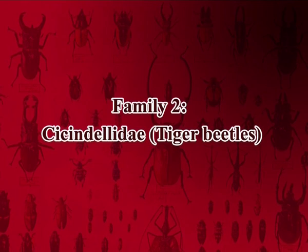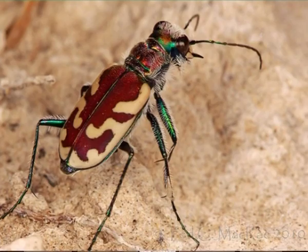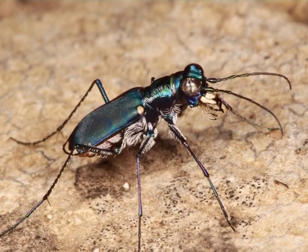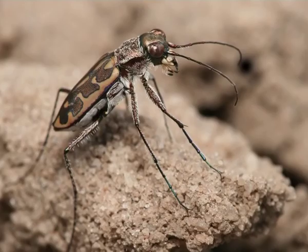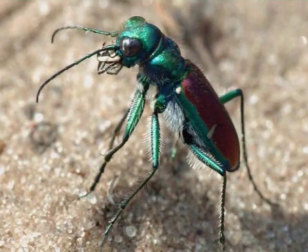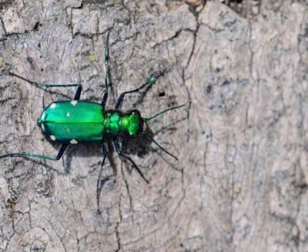The second family is Cicindelidae or tiger beetles. They are brightly colored and metallic beetles with long slender legs. They actively run or fly when disturbed and frequent sunlit spots in sandy areas. The head is wider than pronotum, elytra is without longitudinal grooves, the clypeus is produced laterally beyond the bases of the antennae. Mandibles are long, sickle-shaped and toothed. Larvae live in vertical burrows in sandy soil and wait for their prey. Example: Cicindela sexguttata.